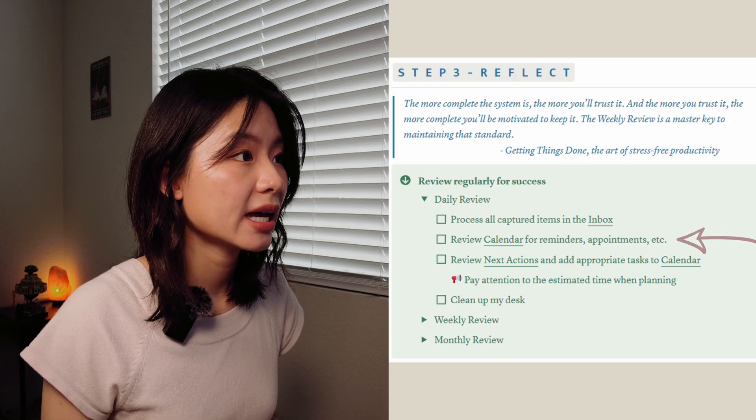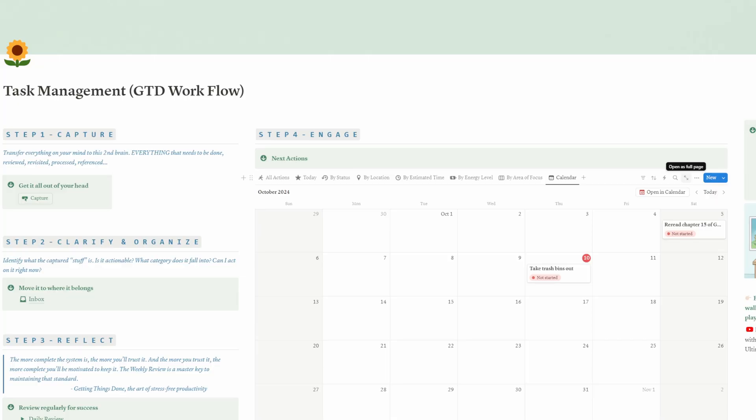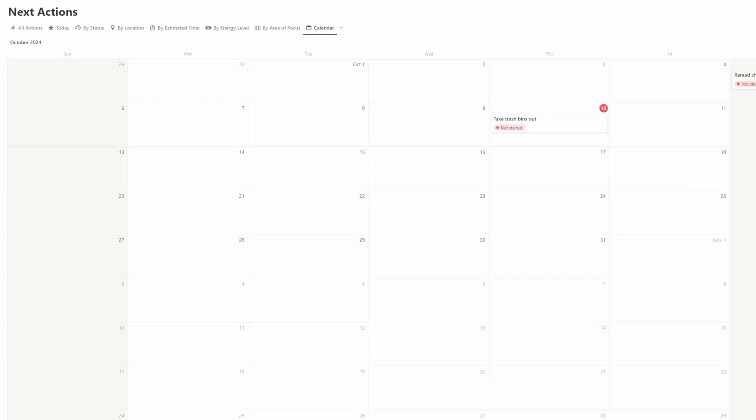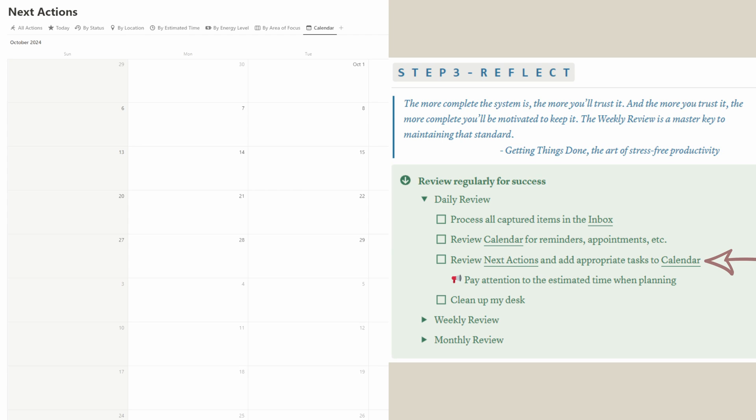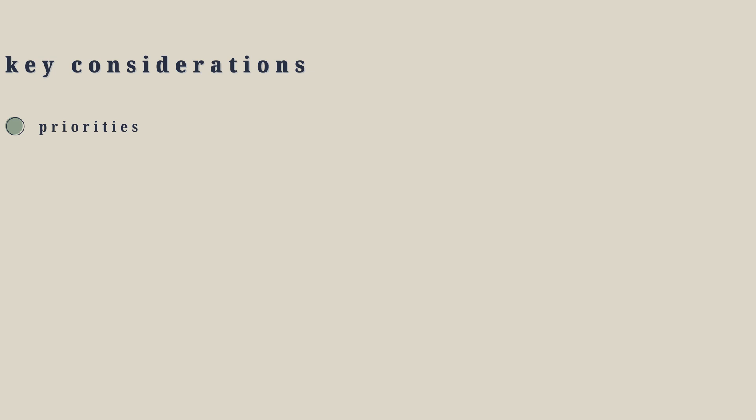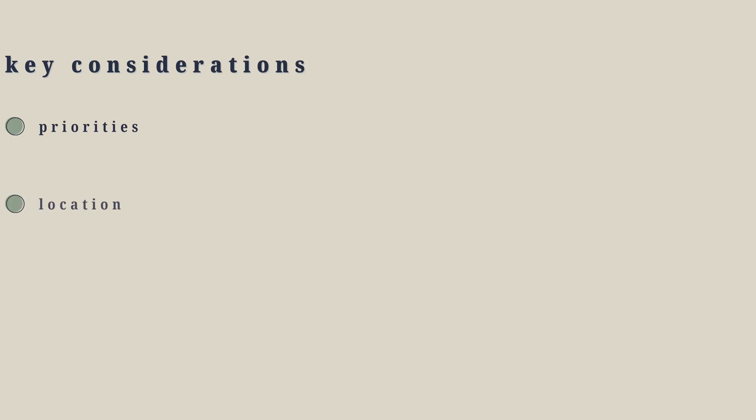Next, check your calendar to see what's on your schedule — appointments, events, activities — and adjust time slots as needed so you can plan your day around these time blocks. I like to expand my task database to full view when deciding what to tackle. When planning your day, there are four key things to consider. First is priorities: what are the most important tasks for the day? These should align with your areas of focus and long-term goals. Second is location: where will you be? If I'm in the office, I won't schedule anything that requires me to be home.